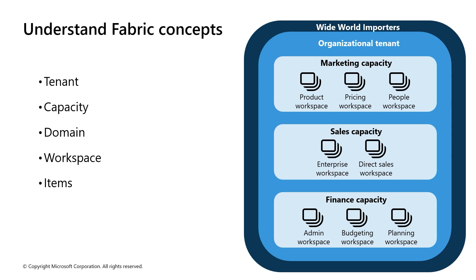A workspace is a collection of items that brings together different functionality in a single tenant. It acts as a container that leverages capacity for work that is executed and provides controls for who can access the items in it. For example, in a sales workspace, users can create a data warehouse, notebooks, data sets, and reports. Fabric items are the building blocks of the Fabric platform — the objects you create and manage in Fabric, such as data warehouses, data pipelines, data sets, reports, and dashboards. Understanding these Fabric concepts is important for you as an admin because it helps you understand how to manage the Fabric environment.